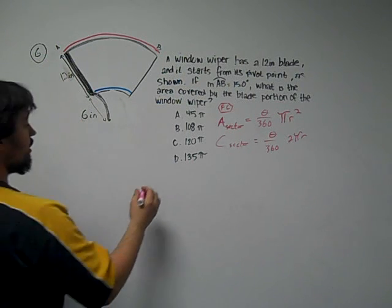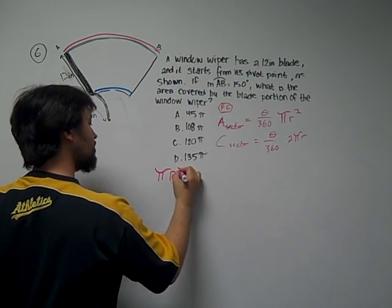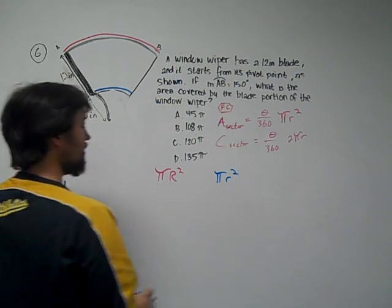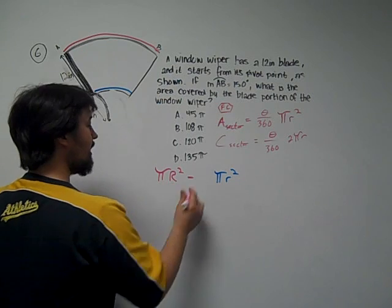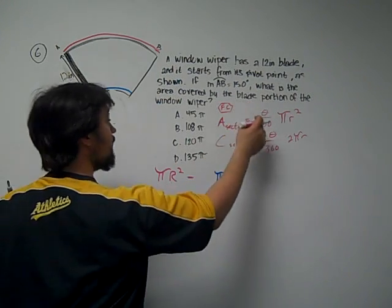So we're going to be going pi big r squared and we have pi little r squared and we're going to be taking the difference of the two. And the last thought is, it's not a full circle, right? It's theta over 360.